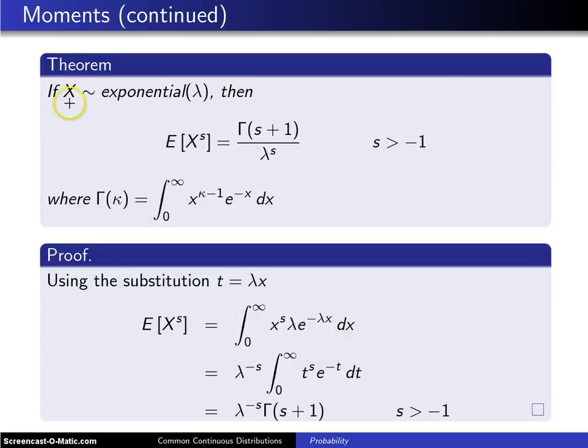Here is a theorem. If x is exponential with parameter lambda, then the expected value of x raised to the s power is the gamma function evaluated at s plus one divided by lambda to the s for s greater than negative one.